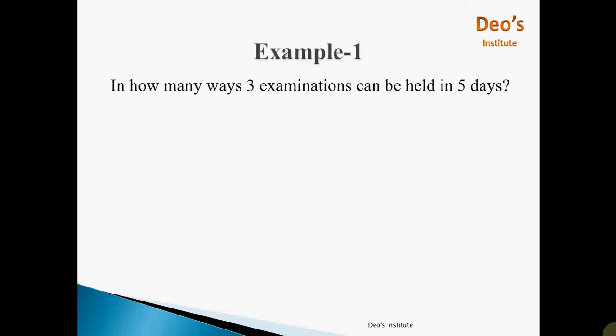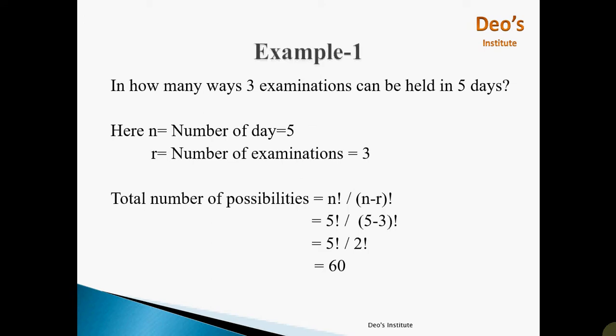Here is the first example from permutation: In how many ways can three examinations be held in five days? This is a very straightforward example. N is equal to number of days equals 5. R is equal to number of examinations equals 3. So nPr gives us the total number of possible outcomes, that is equal to 60.